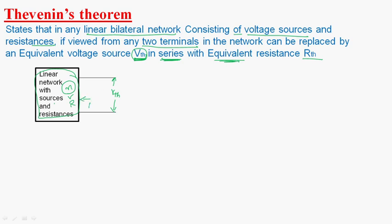What is RTH? RTH is the Thevenin's resistance. If viewed from any two terminals — so these are the two terminals — from these two terminals we have to view the circuit. Let us say P and Q are the two terminals.